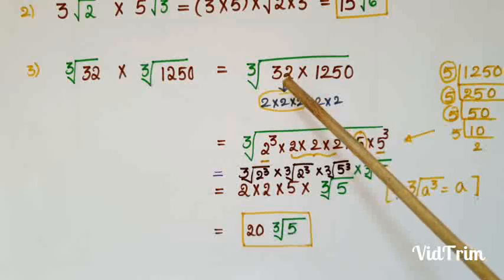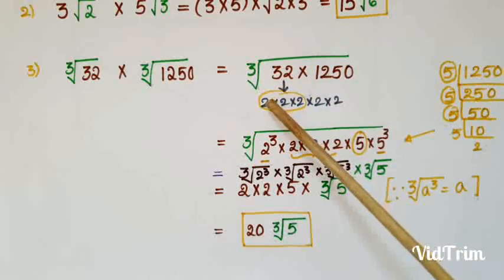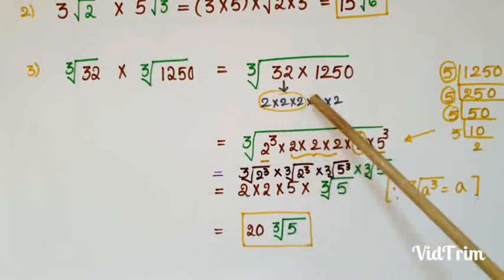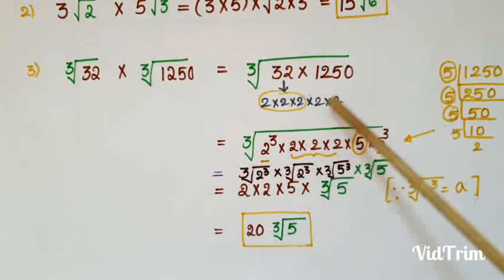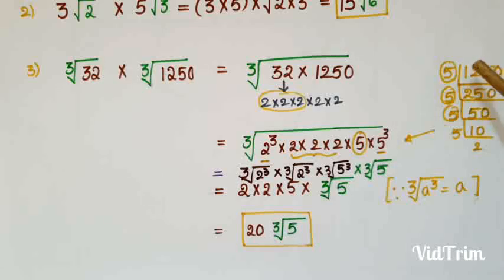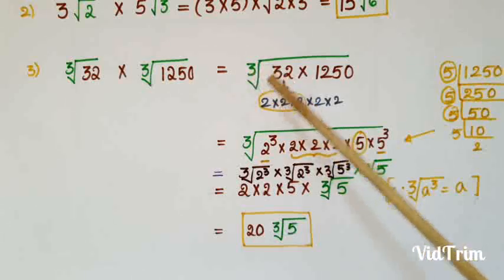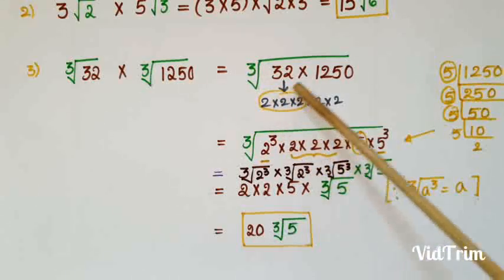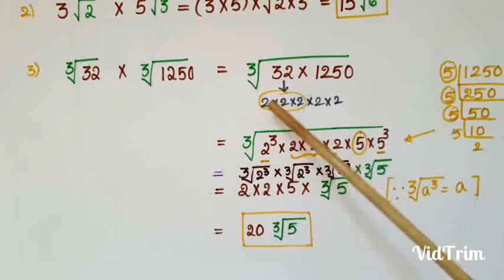To solve this, find the prime factors of both numbers. 32 = 2 × 2 × 2 × 2 × 2. 1250 is a larger number, so find its prime factors using prime factorization. Since there is a cube root, we need to identify groups of three (cube numbers) from these prime factors.